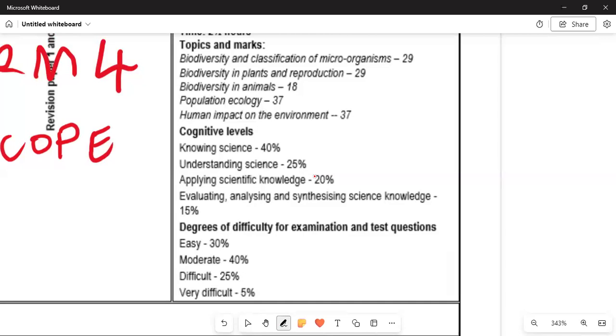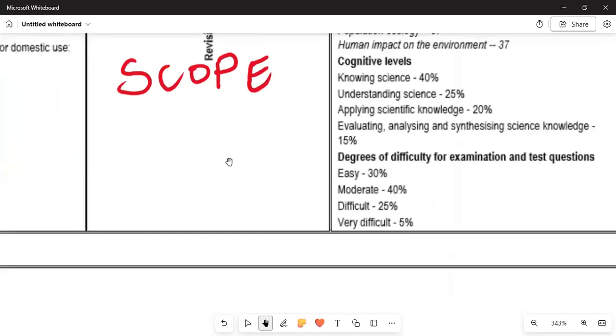Evaluating, analyzing and synthesizing science knowledge is 15%. The degrees of difficulty for exams and test questions: 30% is very easy to pass, 40% moderate, 25% of the content is difficult, only 5% is very difficult.